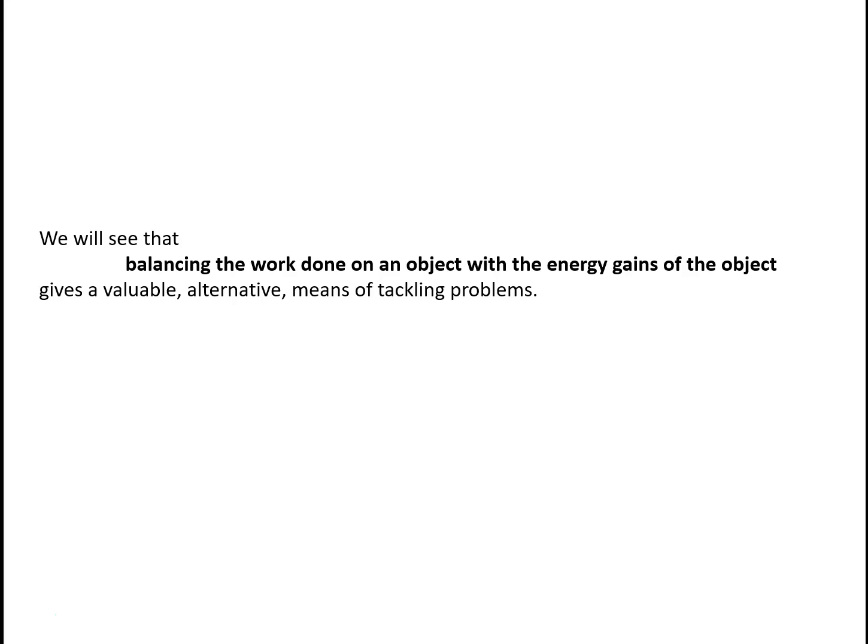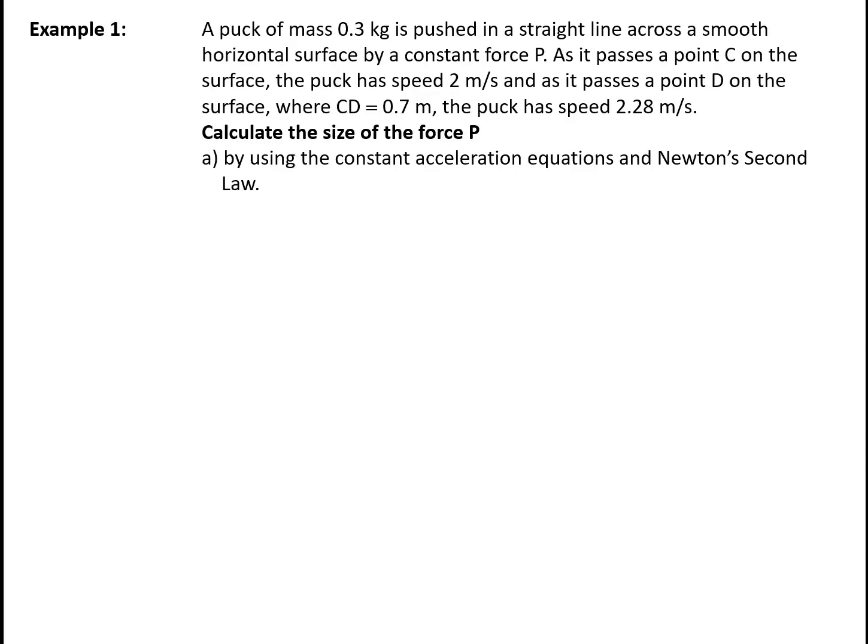We're going to see throughout this video that balancing work done on an object with the energy gains or energy changes of the object gives us a really valuable alternative means of tackling problems. So we have a puck of mass 0.3 kilograms pushed in a straight line across a smooth horizontal surface by a constant force p. As it passes a point C on the surface, the puck has speed 2 meters per second. As it passes a point D, where CD is 0.7 meters, the puck has speed 2.28 meters per second.